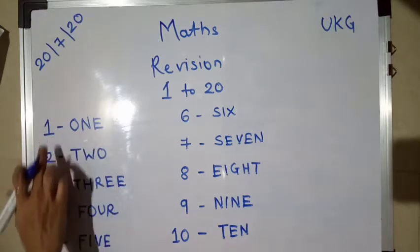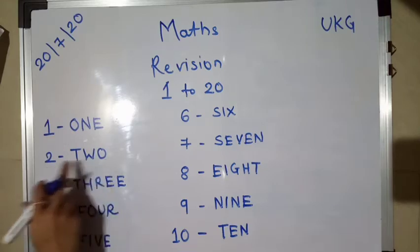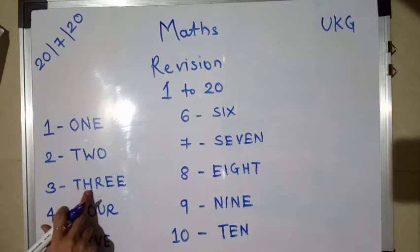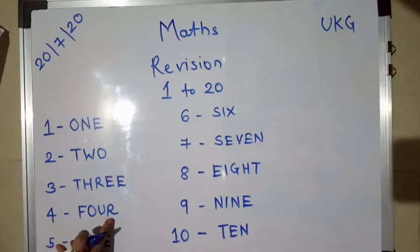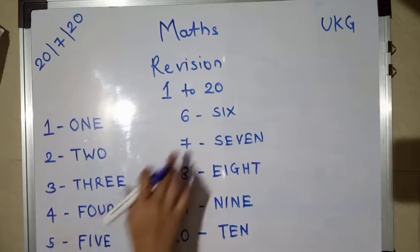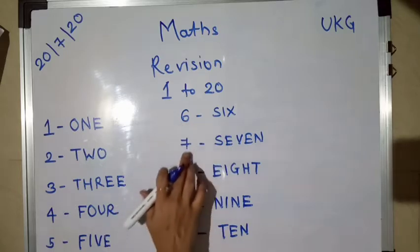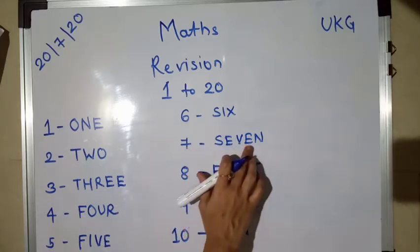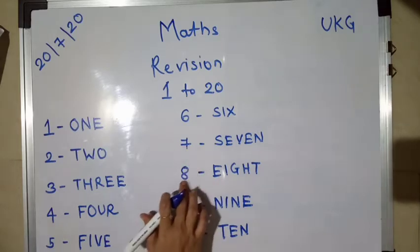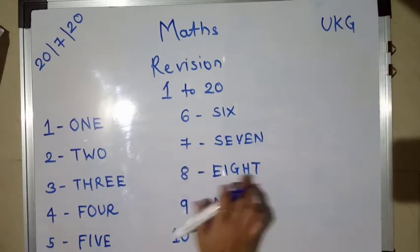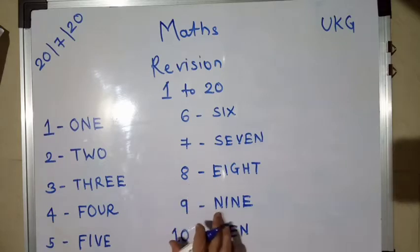So, 1 O-N-E one, 2 T-W-O two, 3 T-H-R-E-E three, 4 F-O-U-R four, 5 F-I-V-E five, 6 S-I-X six, 7 S-E-V-E-N seven, 8 E-I-G-H-T eight, 9 N-I-N-E nine, T-E-N ten.